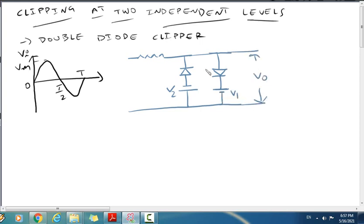Diode D1 has anode and cathode. Diode D2 has anode and cathode. Resistor R, input VI. Now let's discuss the operation.